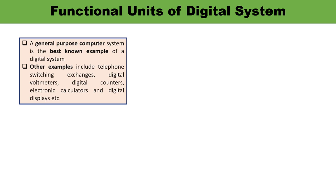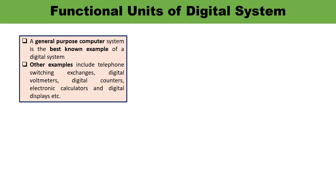When we are talking about a digital system, immediately a general purpose computer, which is a well-known example, comes into our mind. So we are always talking about a computer or a digital computer when we are talking about a digital system. But other than computer, there are some other examples which represent digital systems, like digital voltmeter, digital counters, electronic calculators, and digital displays.